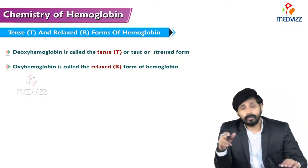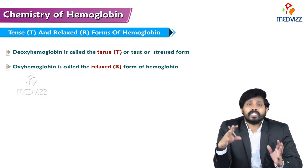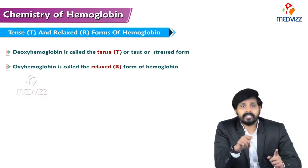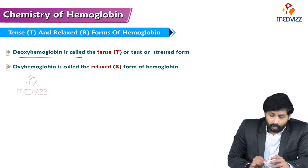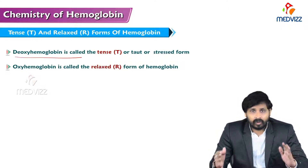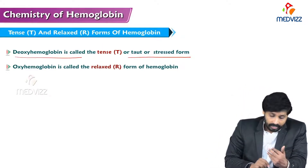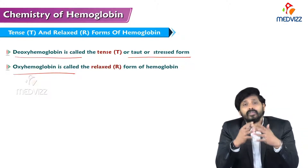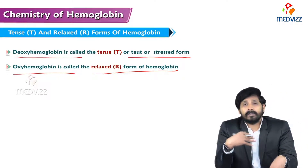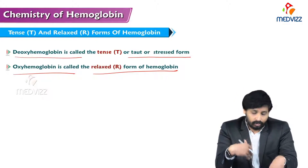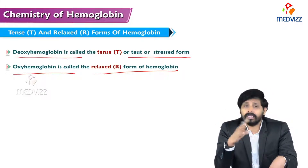To discuss the binding of oxygen to hemoglobin, it is always discussed in two forms: T (tense, taut, or stressed) and R (relaxed) forms of hemoglobin. Deoxyhemoglobin — hemoglobin without oxygen — is known as the tense or stressed form, while oxyhemoglobin — hemoglobin bound to oxygen — is known as the relaxed form.